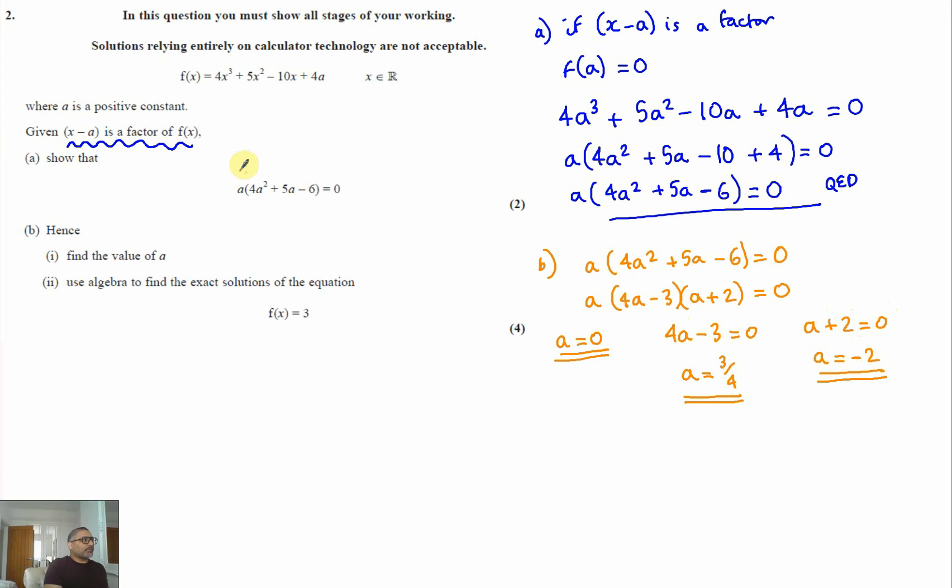Now, they told us where a is a positive constant. That means this one will be invalid. And it's important to write this here so that the person that's marking your test will know this. Minus 2 is not positive. Therefore, that's also invalid. So the correct answer, therefore, a equals three quarters.